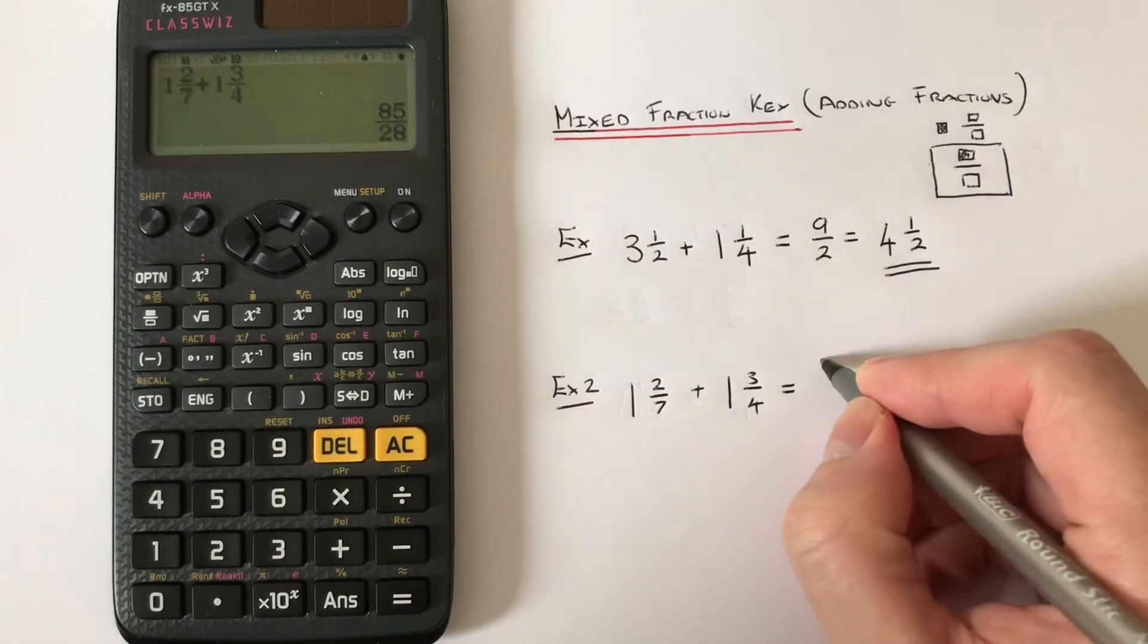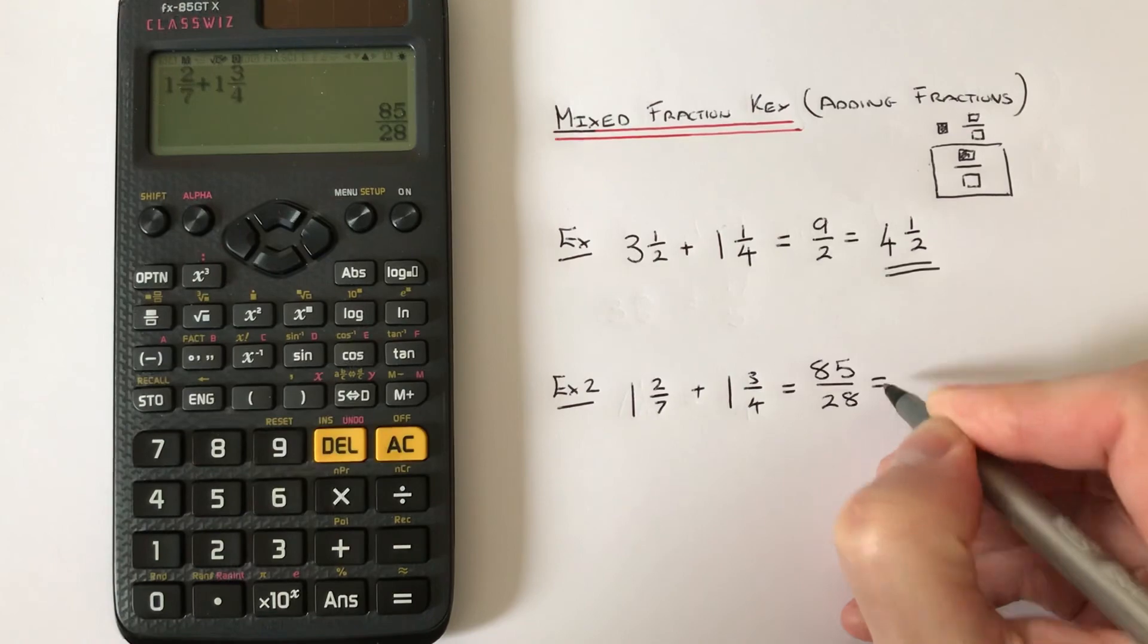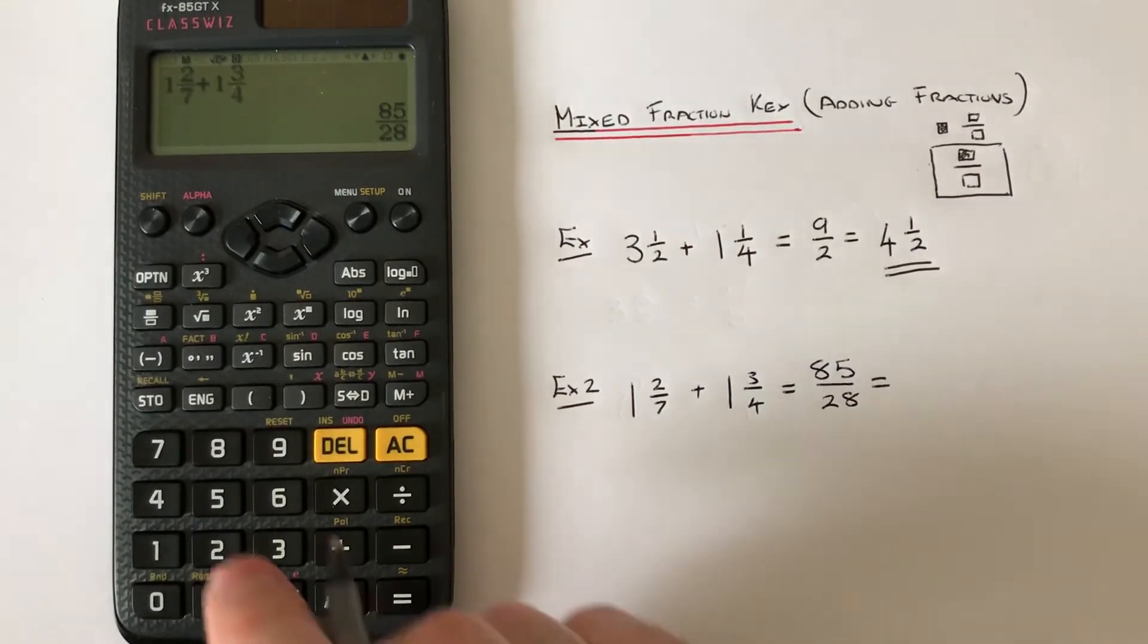Again, it comes up as an improper fraction. To convert it into a mixed number, press shift, SD. Thanks for watching guys, see you next time.